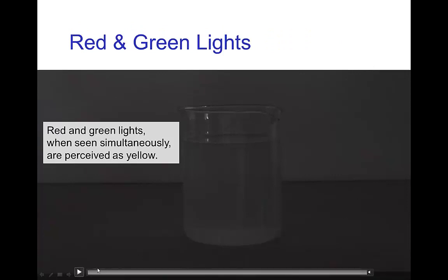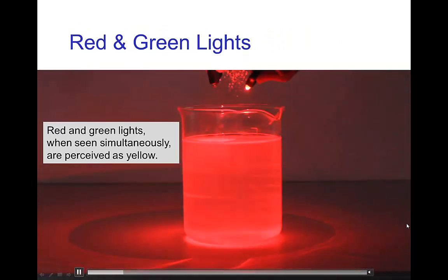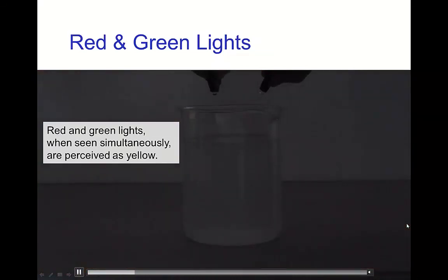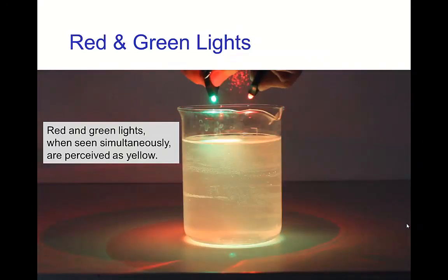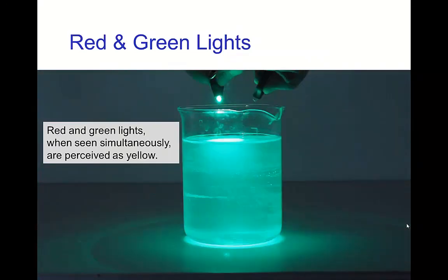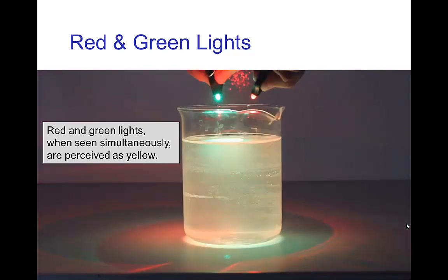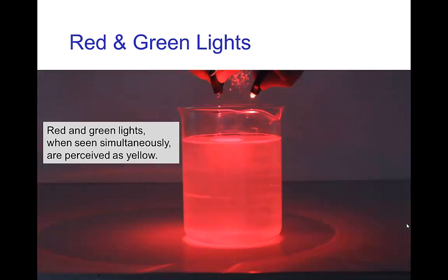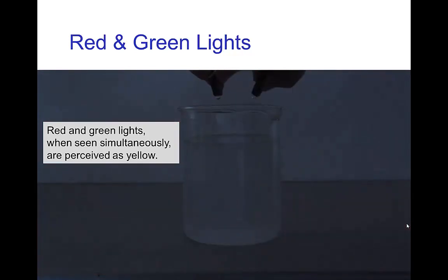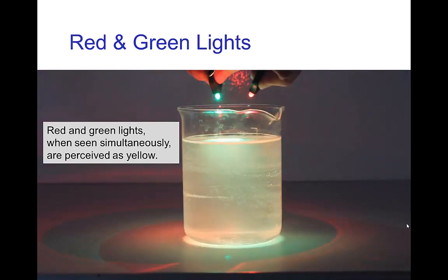Here's an example with some red and green LED lights, just shining them together. And when both of the lights are turned on, you see this pale yellow color.